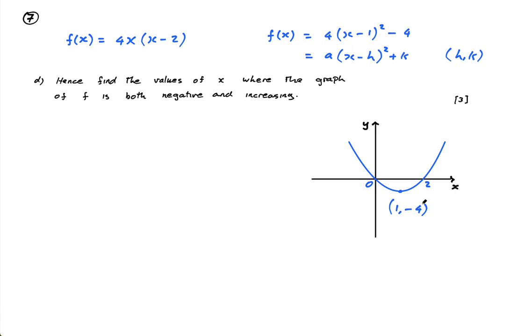Now the question is where is this graph both negative and increasing? So it's negative when it's underneath this line and it's increasing when it's going, well, anywhere from here to infinity it's increasing. Here it's decreasing because it's coming down, increasing it's going up, simple. So where is it both negative and increasing? Well simply from here to here, that part.